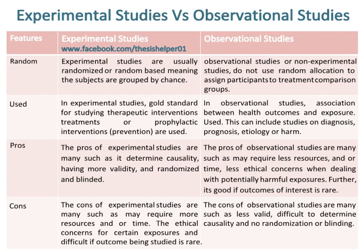Observational studies are also good when the outcome of interest is rare. The cons of experimental studies include requiring more resources and/or time, ethical concerns for certain exposures, and difficulty if the outcome being studied is rare. The cons of observational studies include being less valid, difficulty in determining causality, and no randomisation or blinding.